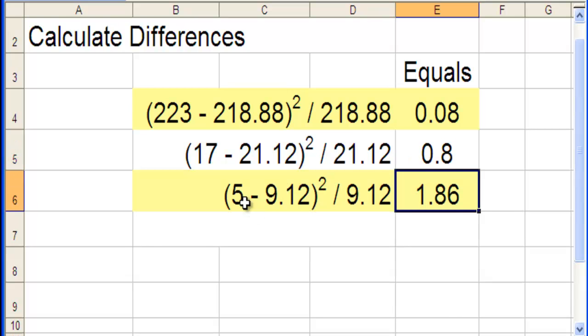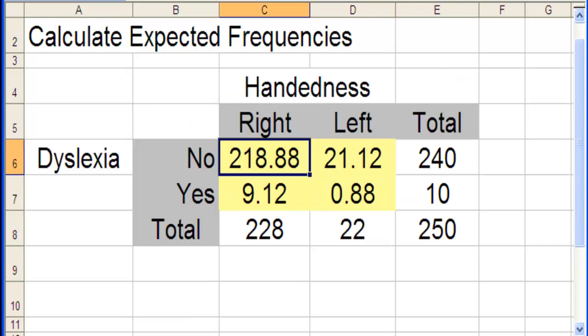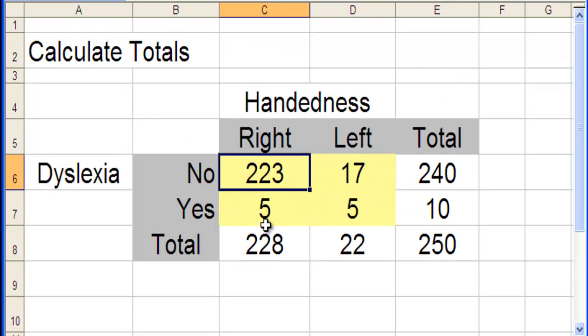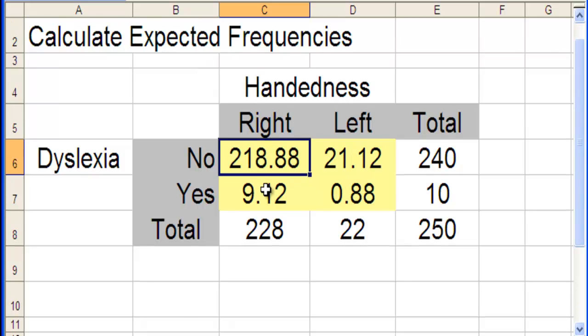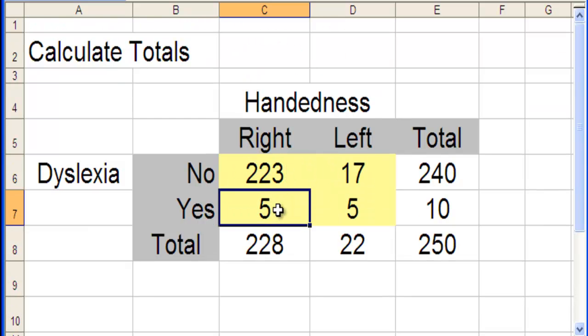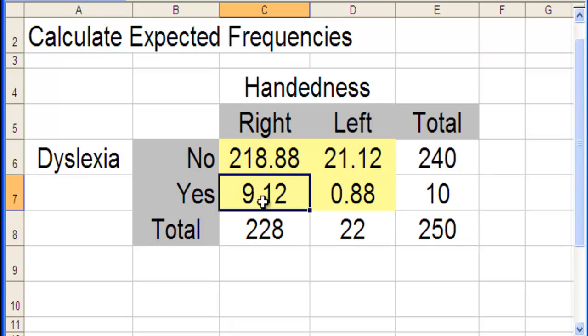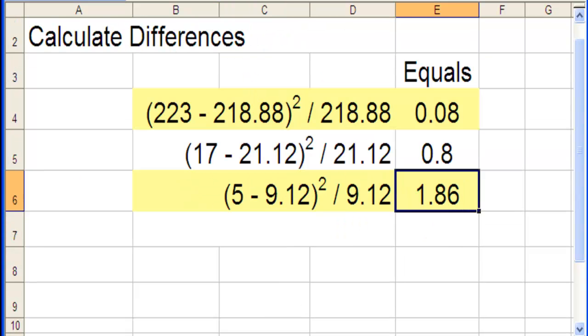Now for right-handers, actually let me check. 5 and 9, that's where I'm getting these values. The observed right-handers who do have dyslexia, right-handers who are expected to have dyslexia is 9, but it's only observed at 5. Okay, so that's where I got those numbers. 9 minus 9.12 squared divided by the expected frequency, 1.86.